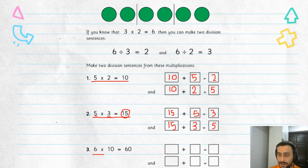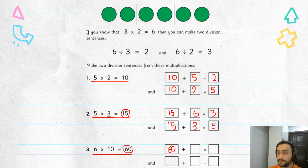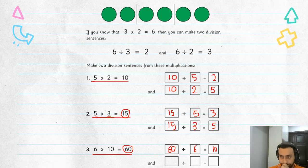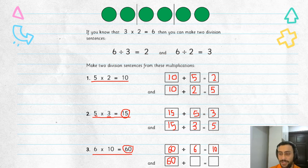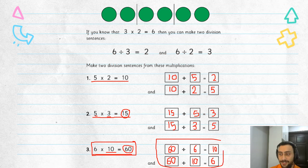Last one: six times ten equals sixty. This is a big number. So we put the big number here. Sixty divided by six equals ten. And sixty divided by ten equals six. Hey, this is cool — I know this, so I know this.